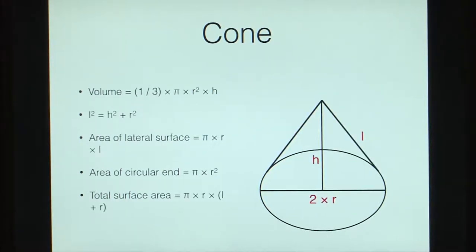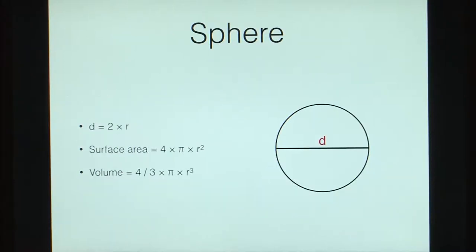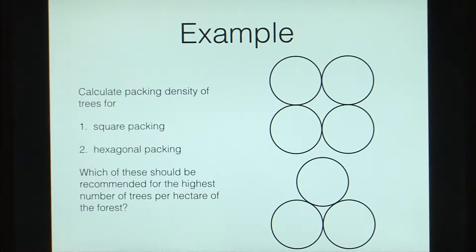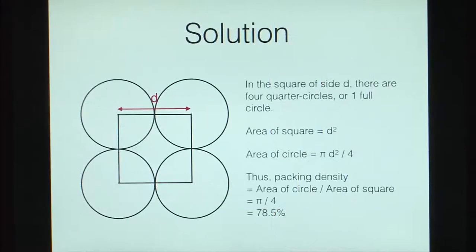For a cone, the volume is 1/3 of the cylinder volume, the lateral surface area is πrl, and the end surface area is πr², giving a total area of πr(l+r). This conical shape is used for canopies. For a sphere, the diameter is twice the radius, surface area is 4πr², and volume is 4/3 πr³. We used these equations to calculate the packing density of trees in a forest — either squarish packing or hexagonal packing, where trees form an equilateral triangle.